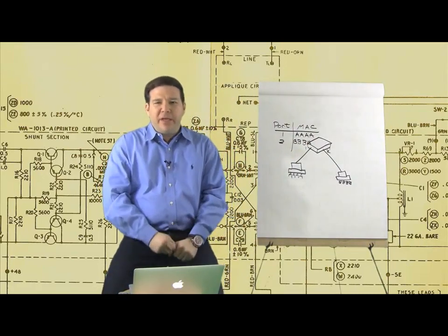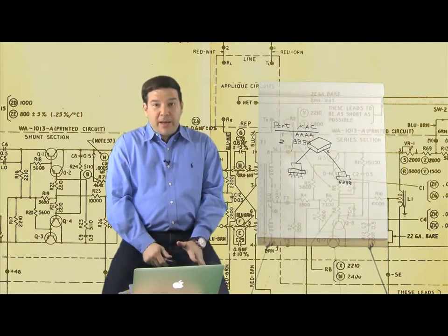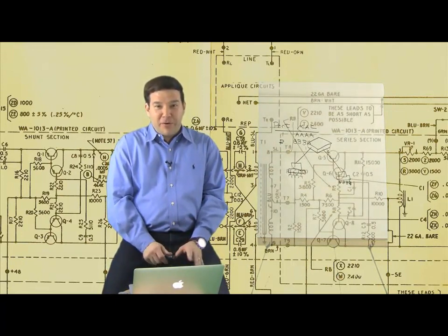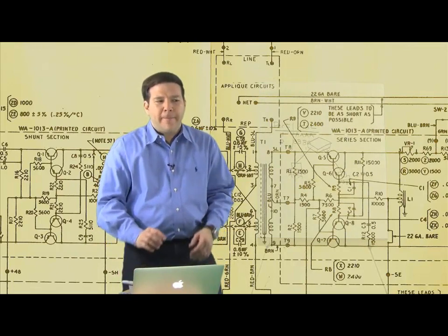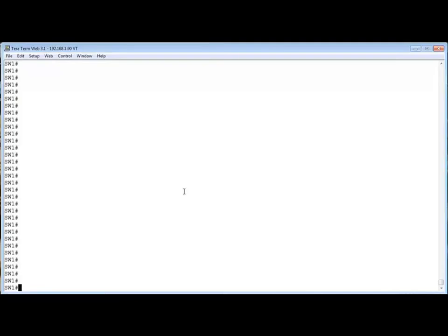And to illustrate this a bit further, let's go out to some live gear right now. Let's go out to an actual Cisco Catalyst 3750, and let's take a look at what MAC addresses reside on which ports.